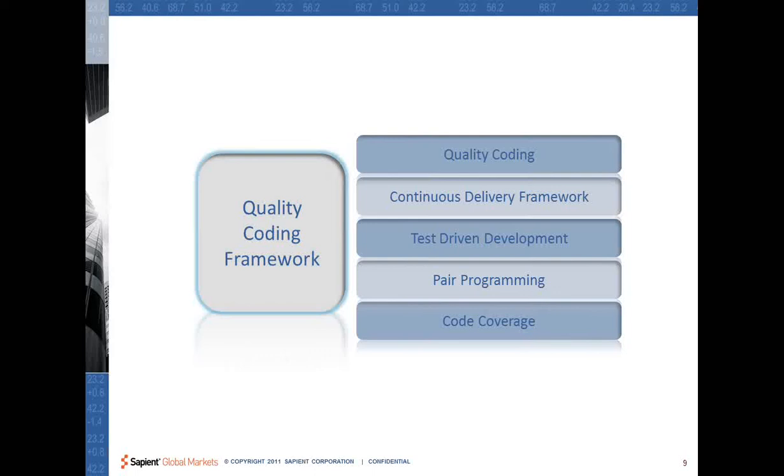So in this code quality framework I will be talking about five different elements which are quality coding, having continuous delivery framework, following test driven development or TDD as we say, pair programming, and having good code coverage.